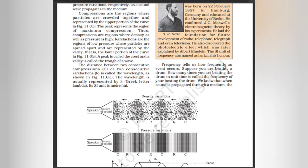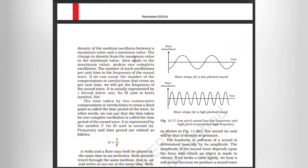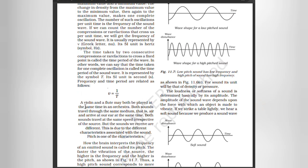Frequency tells us how frequently an event occurs. Suppose you are beating a drum — how many times you beat the drum in unit time is called the frequency of your beating. When sound is propagated through a medium, the density of the medium oscillates between a maximum and a minimum value. The change in density from maximum to minimum and back to maximum makes one complete oscillation. The number of such oscillations per unit time is the frequency of the sound wave. If we count the number of compressions or rarefactions passing a fixed point per unit time, we get the frequency. It is usually represented by ν (nu). Its SI unit is hertz. The time taken for one complete oscillation is called the time period of the sound wave, represented by T. Its SI unit is second. Frequency and time period are related by: ν = 1/T.